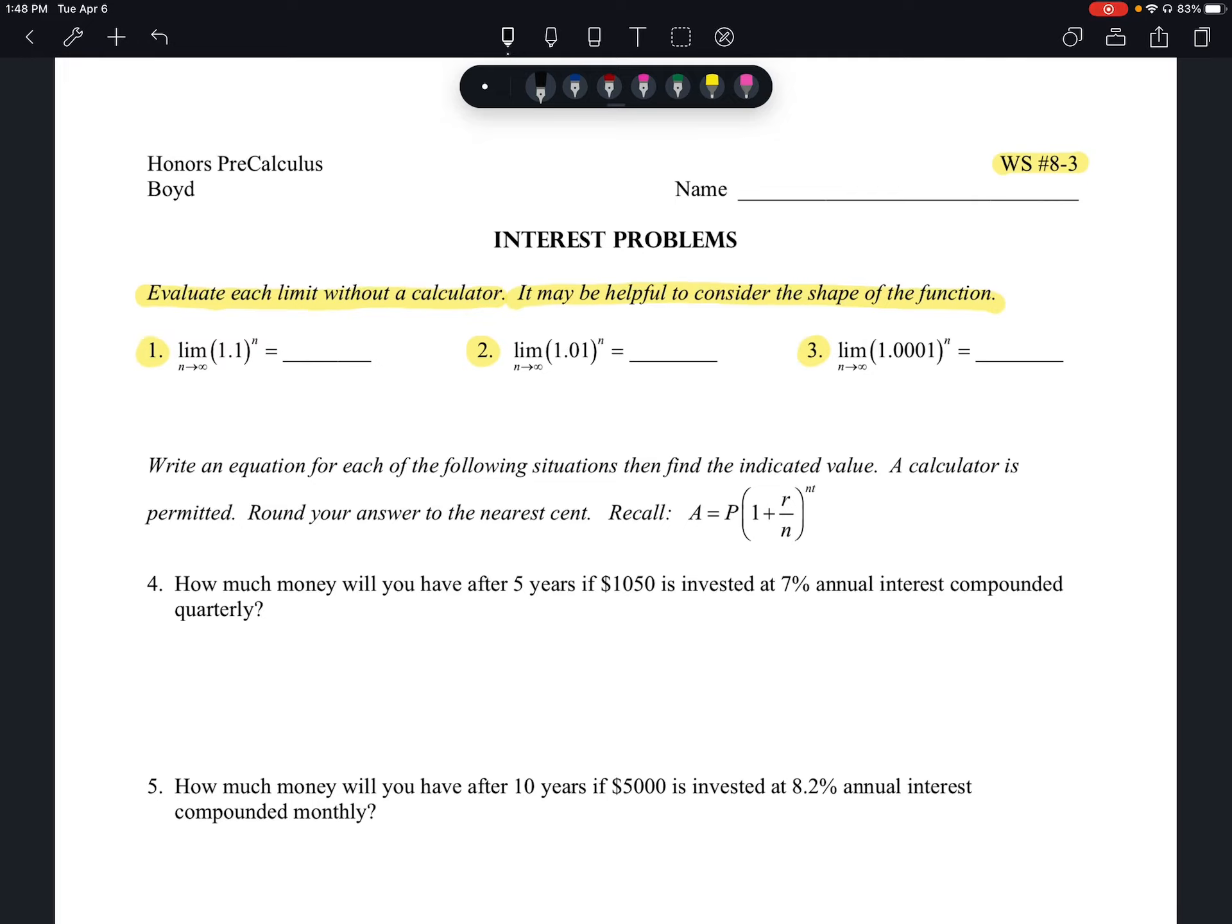Number 1, we have the limit as n approaches positive infinity of the function 1.1 to the power of n. If you think about that function 1.1^n, we know it's exponential. And when we're looking at that, we need to make sure we're focused on the base.